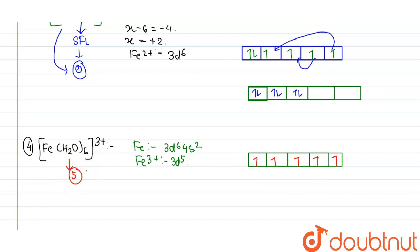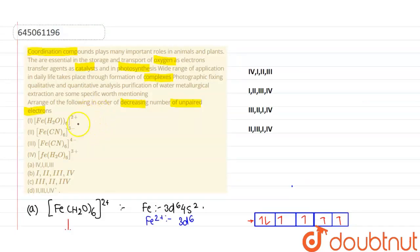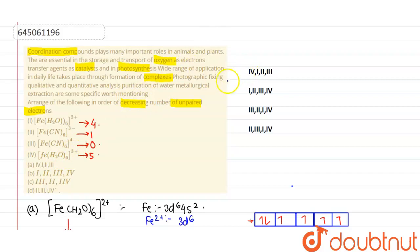We have now calculated the number of unpaired electrons in all complexes. In the first complex it is 4, in the second it is 1, in the third it is 0, and in the fourth it is 5. The decreasing order is: fourth complex first (5), then first (4), then second (1), then third (0). So option A is correct.